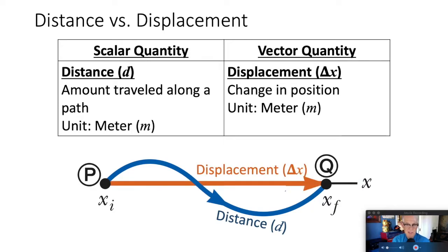Displacement is similar, but different in very important ways. Displacement is, first, a vector quantity, and has magnitude and direction information.